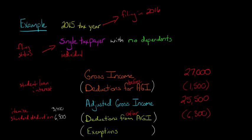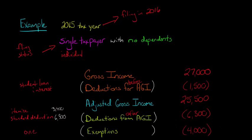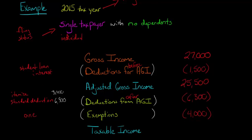Now we have to think about how many exemptions we have. Since you're just supporting yourself — no spouse, no children — your number of exemptions is just one. For the 2015 tax year, one exemption is worth $4,000. That is deducted from AGI along with the standard deduction. So we subtract both the $6,300 standard deduction and the $4,000 exemption from the $25,500 AGI, giving us taxable income of $15,200.